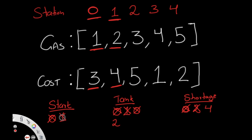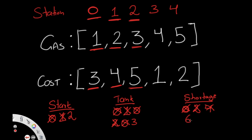Now at station two, we get three liters of gas — so our tank becomes three. To get to the next station, we need five liters, and again we don't have enough. That's a shortage of five minus three equals two, bringing our total shortage value up to six. We change our start to station three and reset the tank to zero.